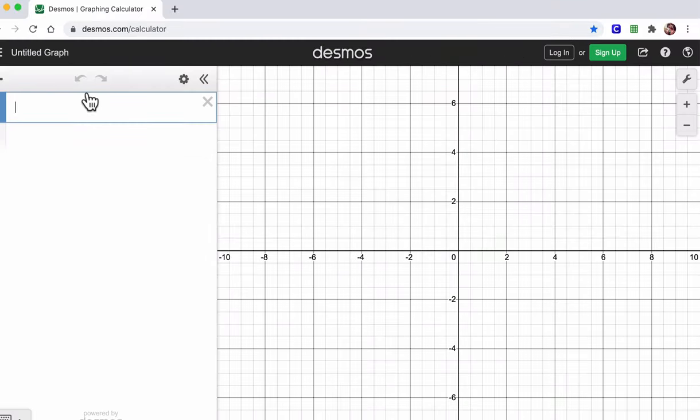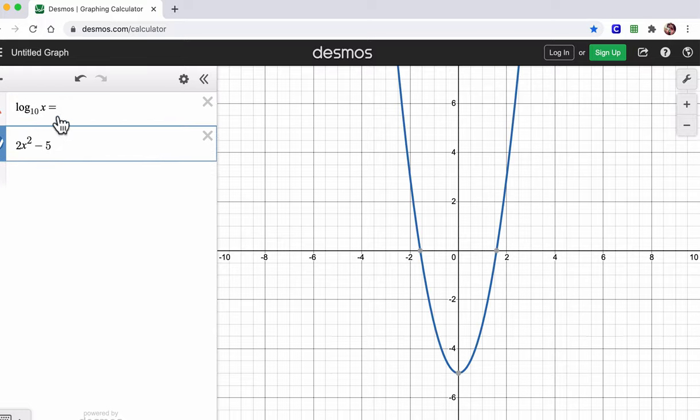In Desmos, you can type in log base 10 of x equals 2x squared minus 5. What are you looking for? You're looking to see where they cross each other. In our case, to make it easy, let's graph it like this. I'll show you that graph again I just had. Graph these two as functions and see what's going on.